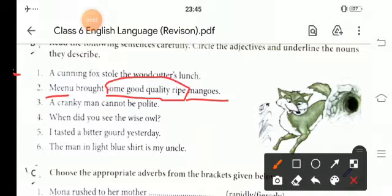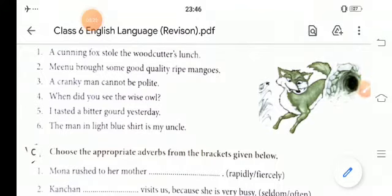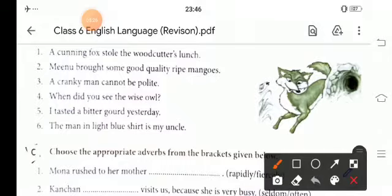Third one is, a cranky man cannot be polite. So, man and what is the character of the man? He is cranky and cannot be polite. Then, when did you see the wise owl?